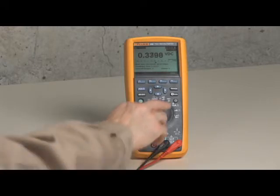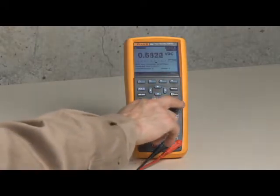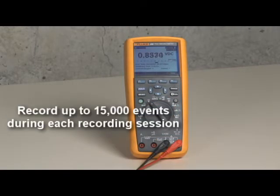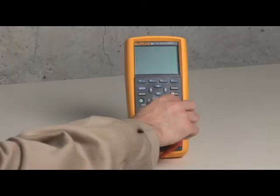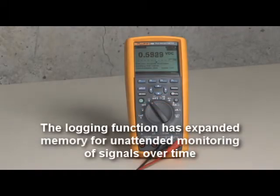While you're away, the 289 or 287 will be working for you. It can store up to 15,000 recorded events over time while saving multiple logging sessions before downloading to your PC.